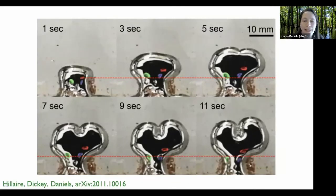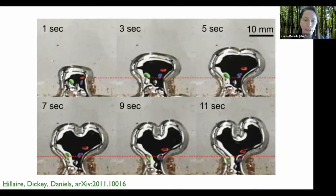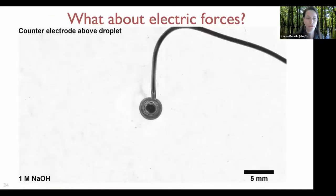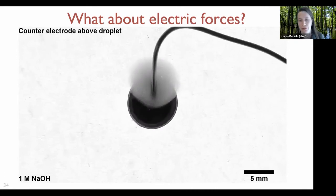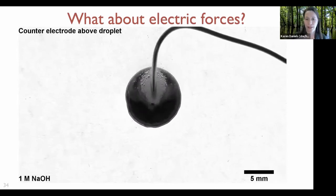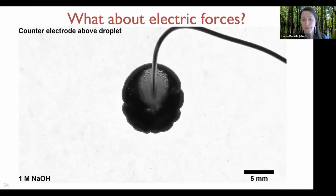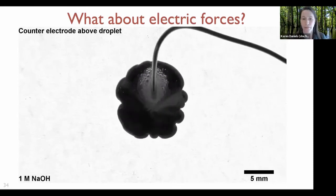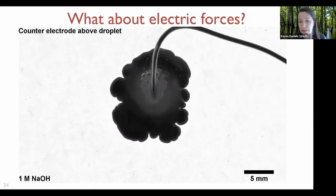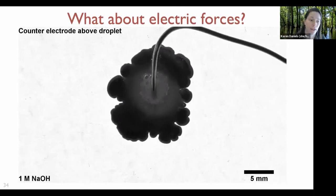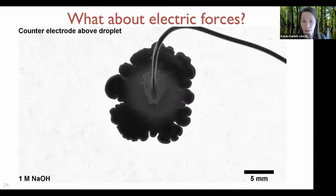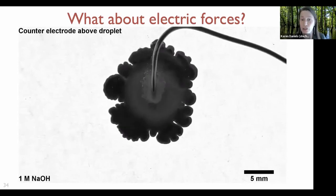A key counter-argument is that these could be electric rather than Marangoni forces. We tested this by placing the counter electrode above the droplet so the electric field is vertical while the spreading is horizontal — the oxide still builds up and the surface still goes unstable as surface tension drops. This suggests it's not Coulomb forces or electrokinetics driving the fingering; we do think it's Marangoni.